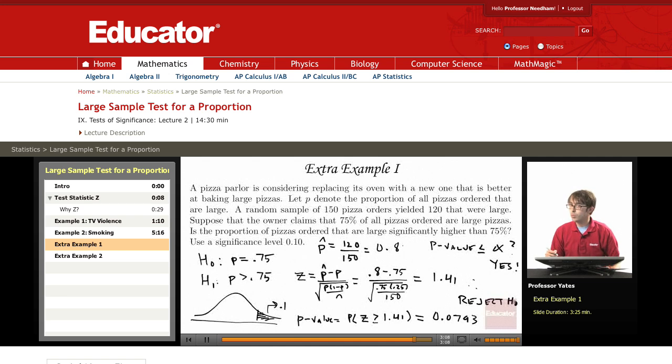In other words, we have enough data to conclude that the proportion of pizzas ordered that are large are significantly higher than 75%. So with this better oven, we're able to make a greater proportion and handle a greater proportion of large pizza orders.